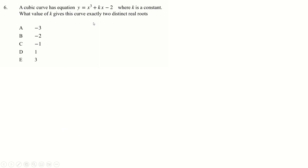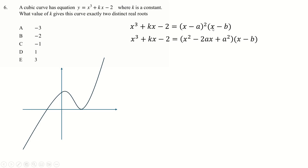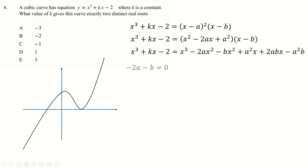Question 6 — much nicer. Two distinct roots means... I was about to say we want the discriminant to be positive, but it's a cubic. For a cubic to have exactly two distinct real roots, one must be repeated, so the cubic factorizes as (x − a)(x − b)² — or the other way around. Expanding the right-hand side gives us this expression.